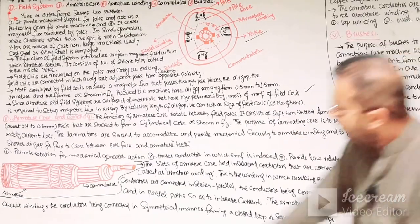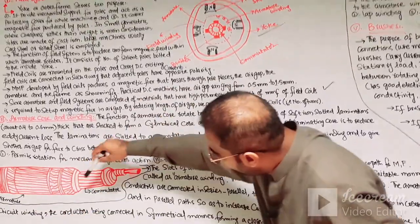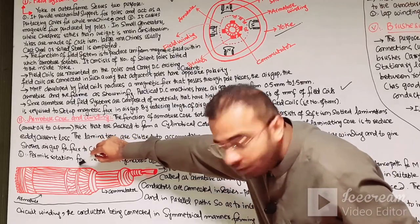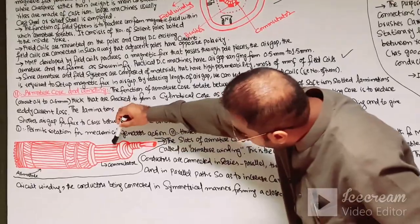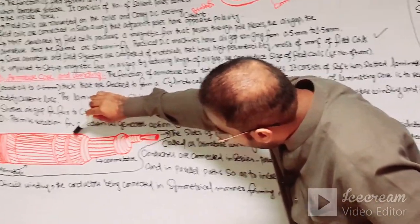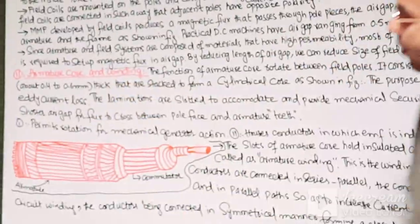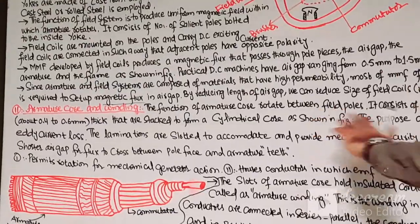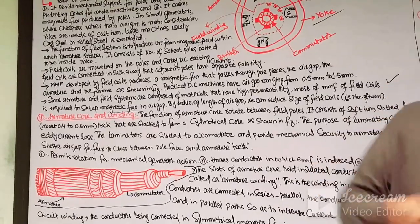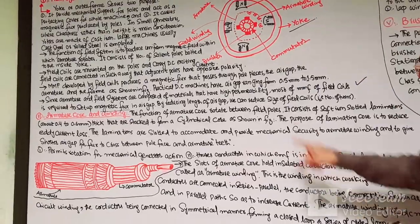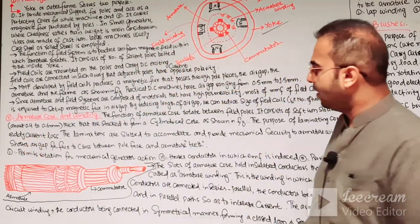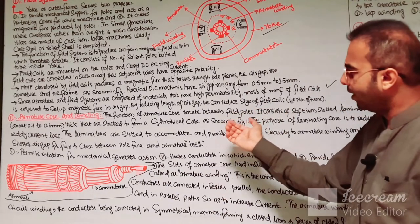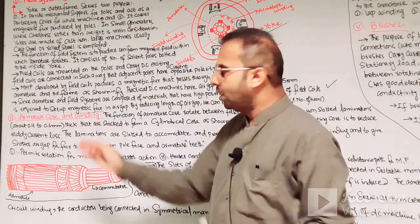The armature core and winding are the second principal component. AC voltage is produced in the armature conductors of the DC machine, and the commutator connected to the armature core converts this AC voltage into direct voltage. The armature is the moving part of the DC machine in which the working EMF is induced. It consists of soft iron slotted laminations of 0.4 to 0.6 mm thickness stacked to form a cylindrical core.